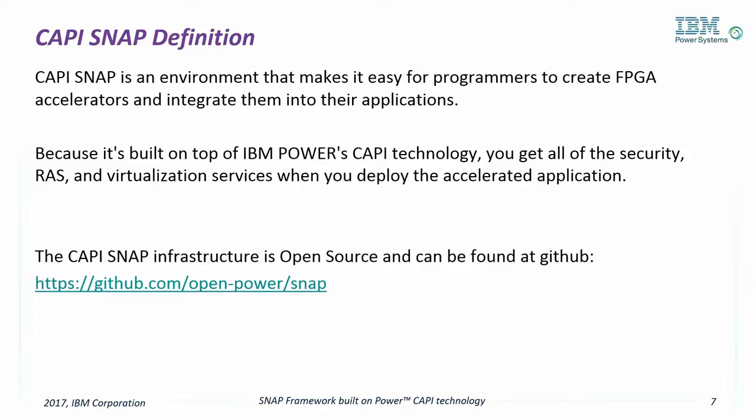The challenge is to enable ISVs, who predominantly have programming skills, to make the leap to acceleration. To overcome that, OpenPower created the CAPI Snap toolset specifically for application developers. CAPI Snap allows programmers to port their code to the CAPI platform and quickly get acceleration results. We are catering to their skill set to ease the jump into FPGAs.